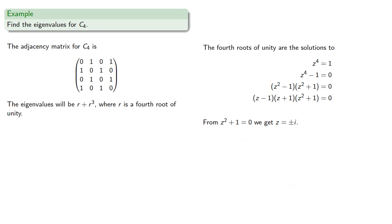And finally, from z equals negative i, we obtain the eigenvalue 0, and another eigenvector.